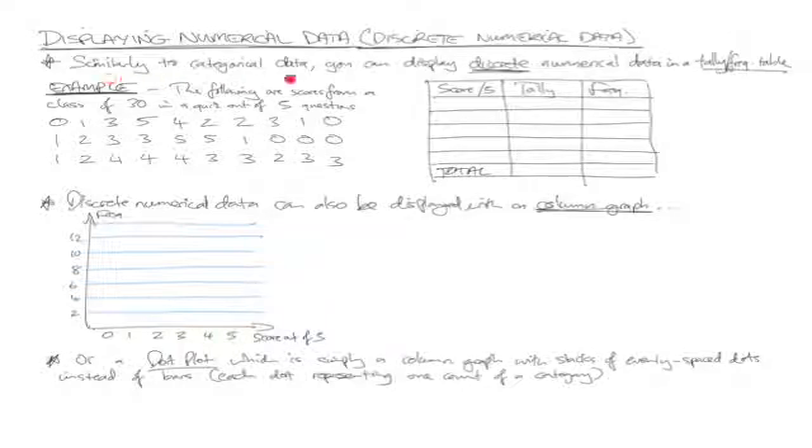These act very similarly to categorical data in that you can display discrete numerical data in a tally frequency table first up. So I've just invented some data here that we could put into a tally frequency table. Let's pretend the following are scores from a class of 30 that took a quiz out of 5 questions, so these numbers represent the number of correct.